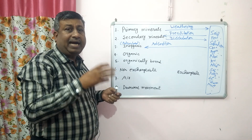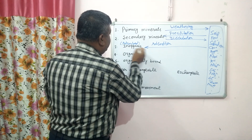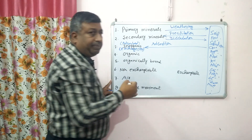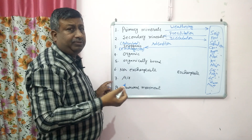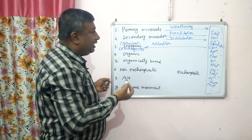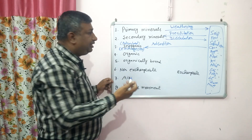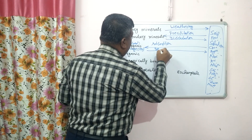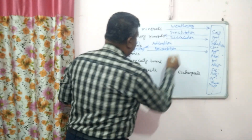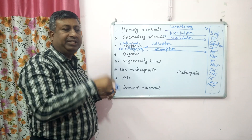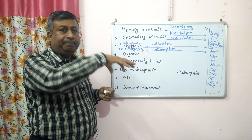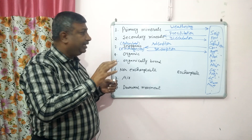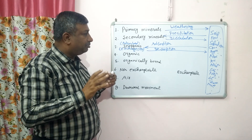Nutrients are present on exchange sites — they are adsorbed and present on exchange sites, which may be cation or anion exchange sites. When adsorbed in inorganic form, that process is known as adsorption, and when they are released into the soil solution, that process is known as desorption. They are not tightly held; they release into the soil solution by the process of desorption. So desorption is the process by which nutrients come into the soil solution from the exchange site.